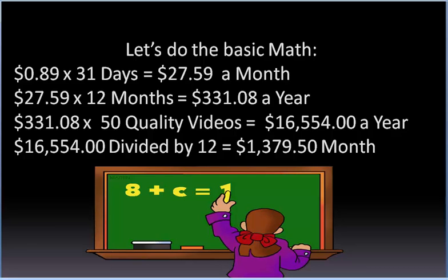$27.59 times 12 equals $331.08 a year. $331.08 times 50 quality videos equals $16,554 a year. $16,554 divided by 12 equals $1,379.50 a month.